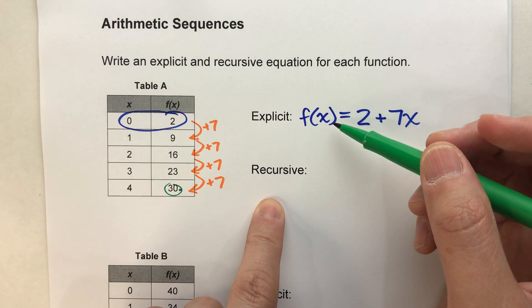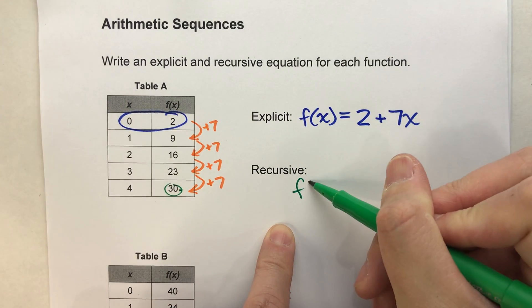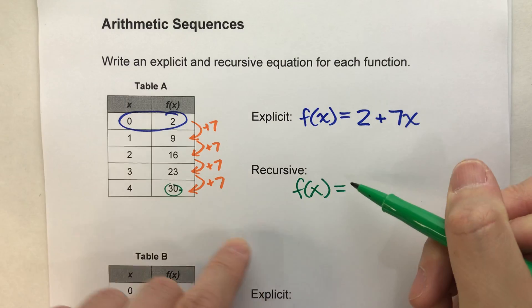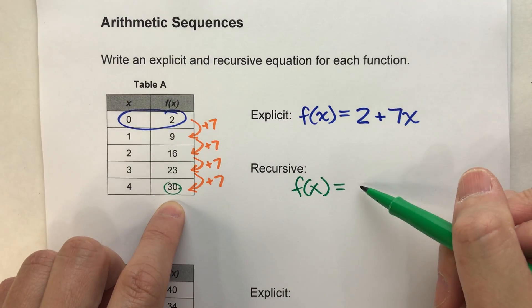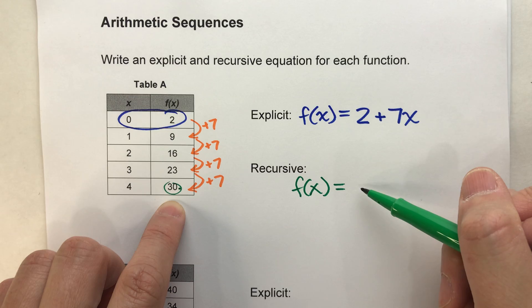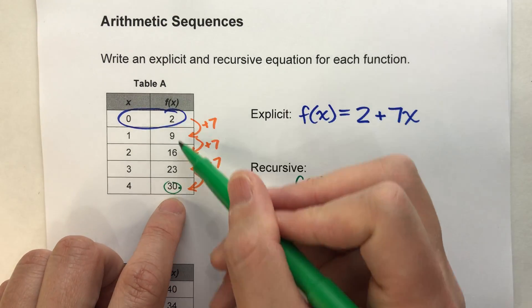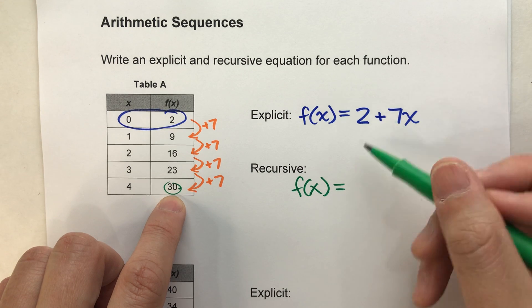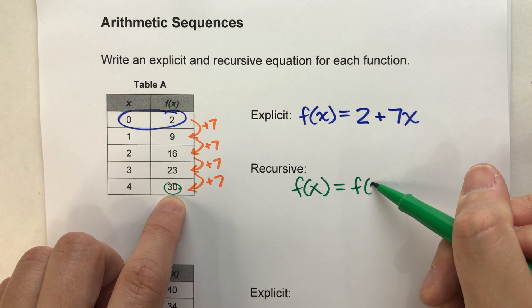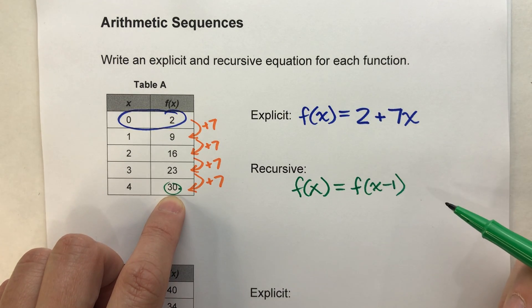Now to write any recursive equation, we'll start with f of x. So any f of x we're trying to find, and like I said before, we need to know the previous value. So if f of x is the current one we're looking at, the one before it is going to be f of x minus 1.